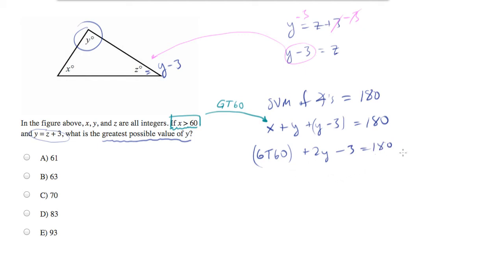And now I'm going to do algebra on this equation. I'm going to treat GT60 like a number. So let's add 3 to both sides. And we'll end up with GT60 plus 2y equals 183. Now I'm going to subtract GT60 from both sides. And we're going to end up with 2y equals... And this is the interesting part of this. We have to figure out what 183 minus greater than 60 is.